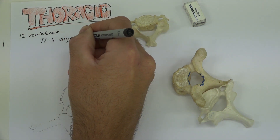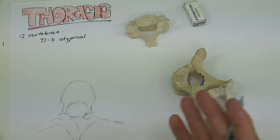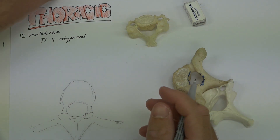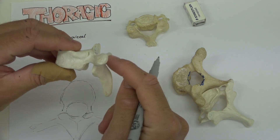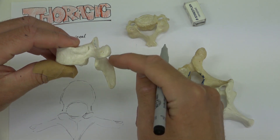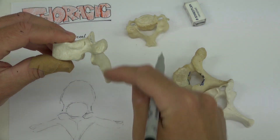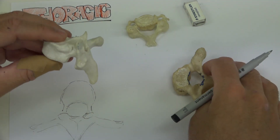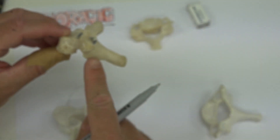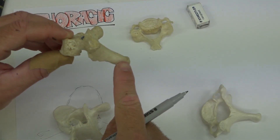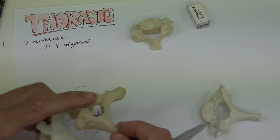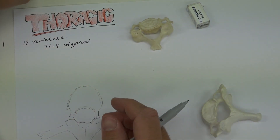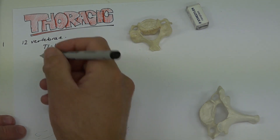Another important feature of thoracic vertebrae is the spinous process. You can see how it is directed inferiorly — it points downwards. Whereas if we come back up to T1, you can see that it's more horizontal in its orientation, which makes them atypical of one another.